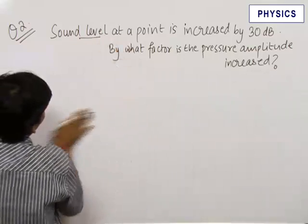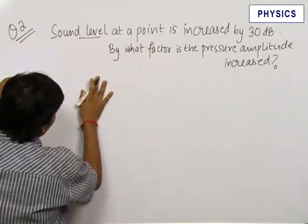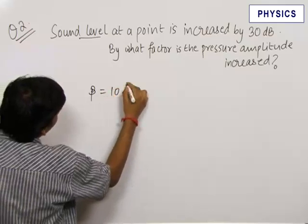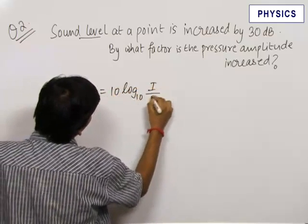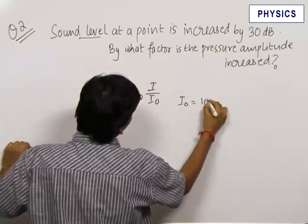We know that for loudness of sound at a particular point, we have a measure. Loudness is measured in decibels by the formula beta equals 10 log₁₀(I/I₀), where I₀ is the reference intensity, equal to 10⁻¹².